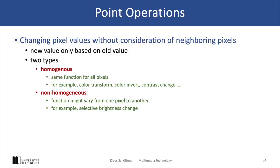Point operations adjust pixel values independently of their neighbors, relying only on the original pixel value. These operations can either be homogeneous, which means they apply the same function across all pixels, or non-homogeneous, where the function varies between different pixels. Examples include color inversion, contrast enhancement, and selective brightness changes. These operations are computationally simple and often used for image pre-processing.